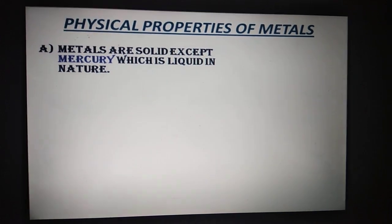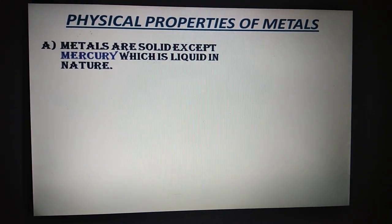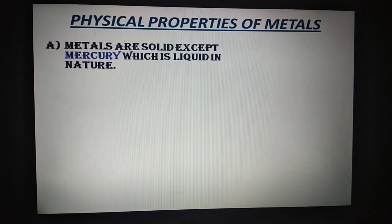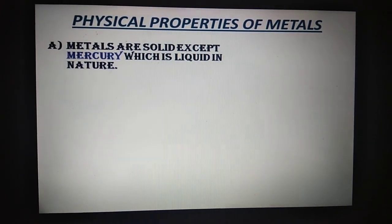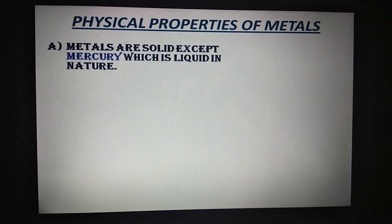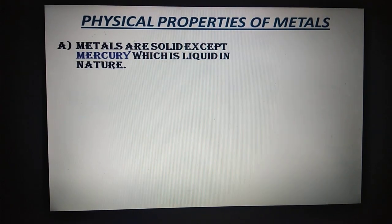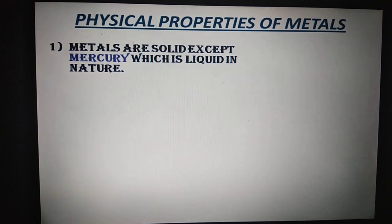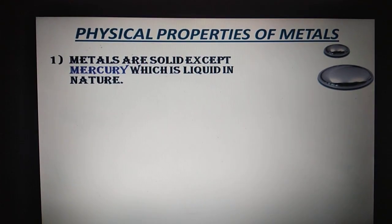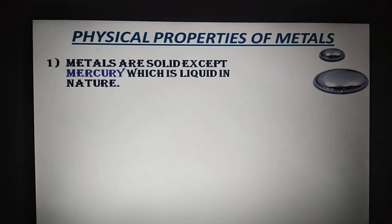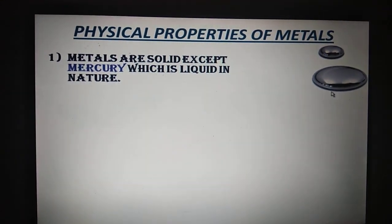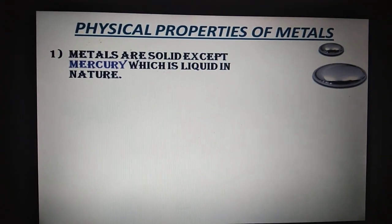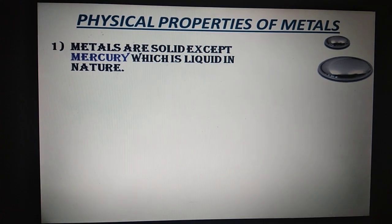The first physical property: metals are generally solid. There is an exceptional case — that is mercury, which is liquid in nature. Here is a picture of mercury you can see on screen. This is a metal which is liquid in state. All other metals are solid.